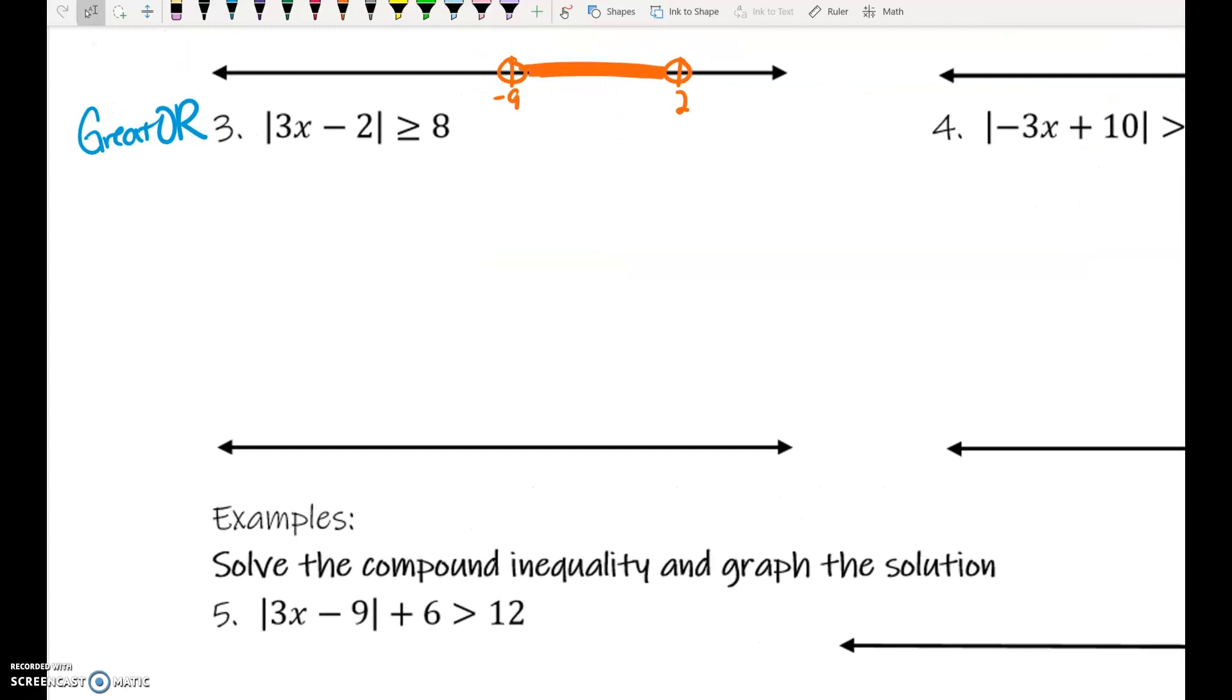We need to write two separate inequalities with the word or in between. I'm going to put the word or kind of right here in the middle. On the right side, I'm going to write the inequality exactly as it was given to me without the absolute value bars. Basically, change nothing. One of your inequalities, you change nothing.